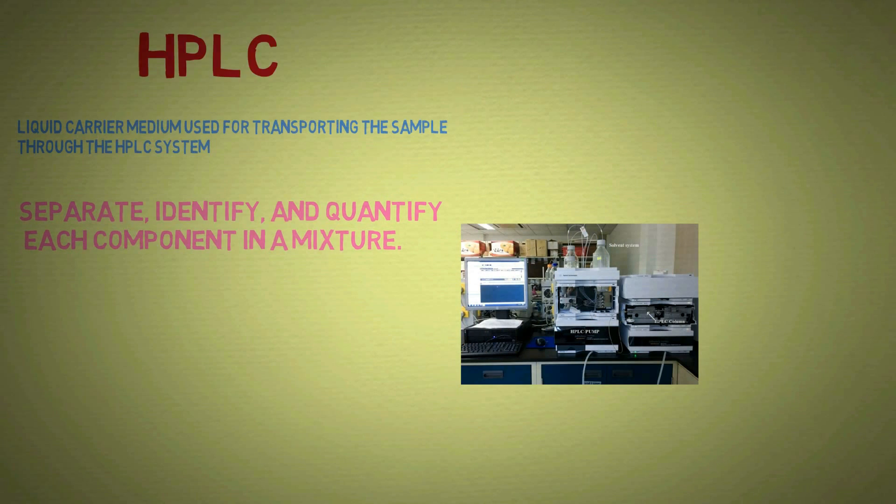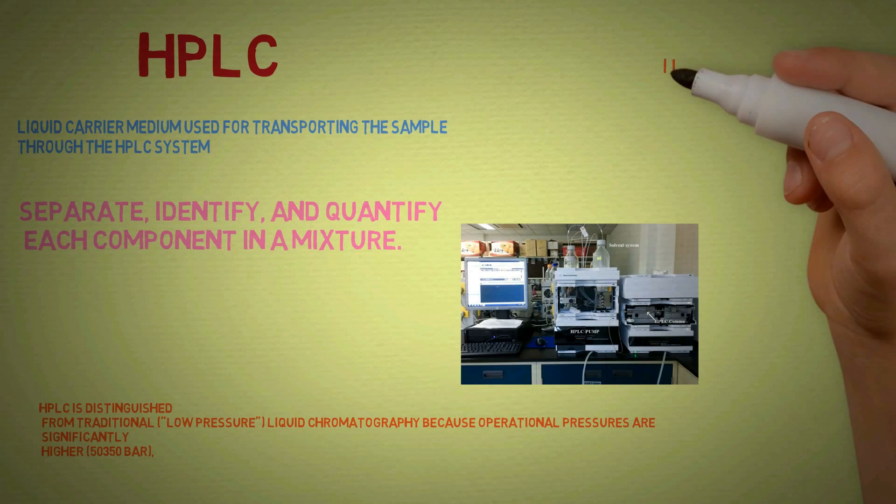HPLC is a very sophisticated chromatography system used for identification and quantification of compounds in a mixture. The separation happens due to the extreme pressure of the mobile phase which is generated by the pump, and this distinguishes it from classical column chromatography.